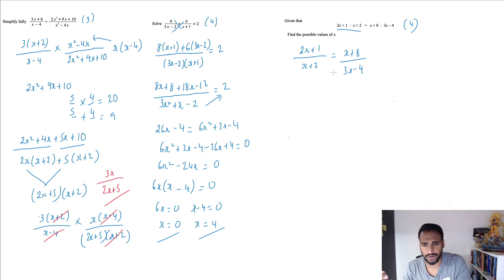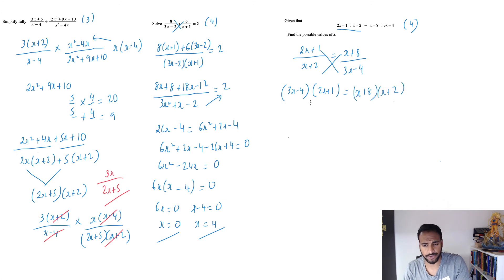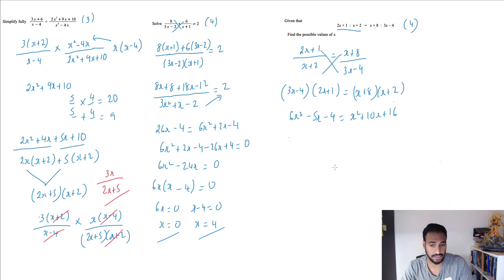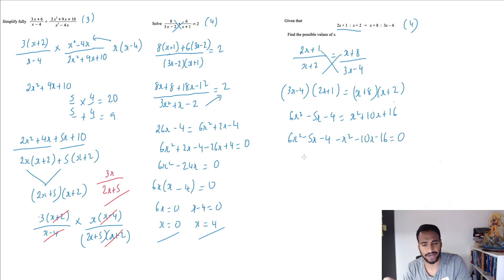When you have an expression like this, straightforward — cross-multiply. So (3x minus 4)(2x plus 1) equals (x plus 8)(x plus 2). Expanding the left: 3x times 2x is 6x squared, 3x times 1 is 3x, minus 4 times 2x is minus 8x, so 3x minus 8x is minus 5x, and minus 4 times 1 is minus 4. Expanding the right: x squared plus 10x plus 16.